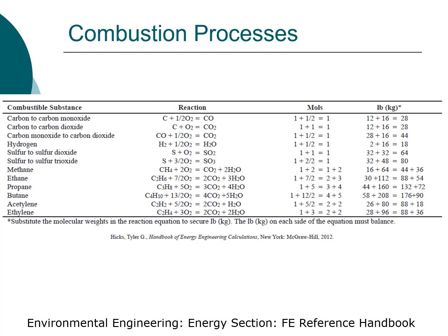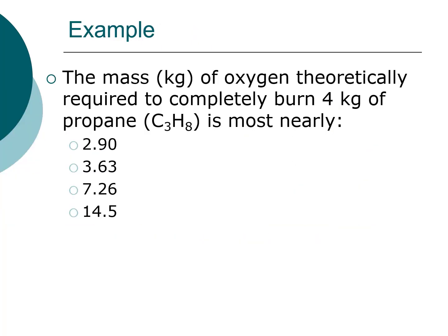This slide provides the table of combustion reactions from the environmental engineering section, giving reactions for combustion of hydrocarbons from methane to butane, ethylene, and acetylene, as well as the oxidation of carbon to carbon monoxide. At low air-to-fuel ratios, you're likely to form carbon monoxide. At stoichiometric air-to-fuel ratios, you form carbon dioxide.